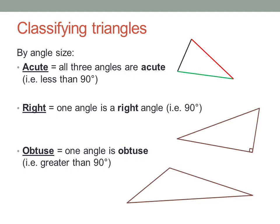Notice that it's impossible to have more than one right angle or obtuse angle in a triangle. Can you see why not?